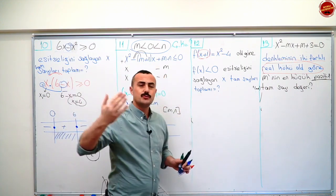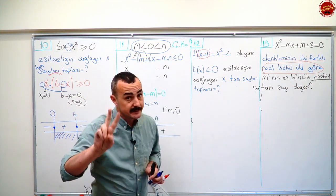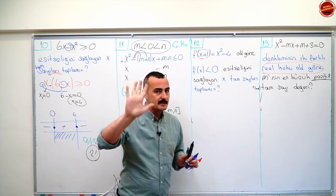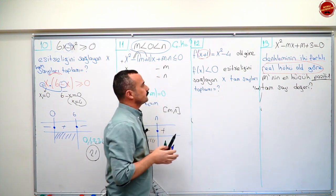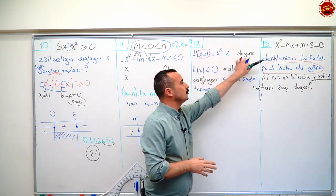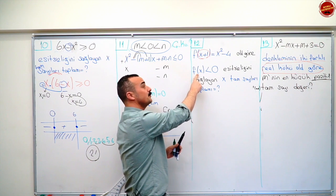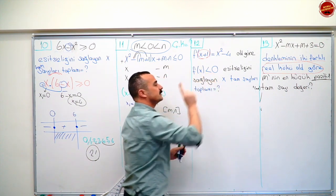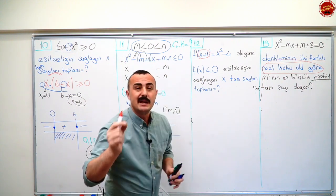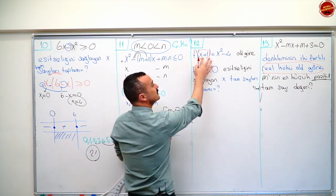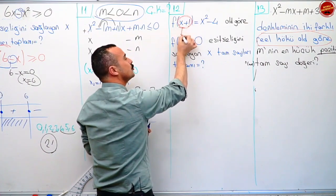Şimdi bir fonksiyon sorusuyla eşitsizlik sorusunu birleştirdik. İki farklı şekilde çözeceğim; ikisini de iyi öğren, ikisi de önemli. Fx artı bir fonksiyonunu vermiş. Fx artı birin sıfırdan küçük olmasını değil, Fx'in sıfırdan küçük olmasını istiyor. Önce bir fonksiyon sorusu gibi düşünelim, Fx'i bulalım. Fx'i bulabilmek için fx artı biri x'e dönüştürmem lazım.